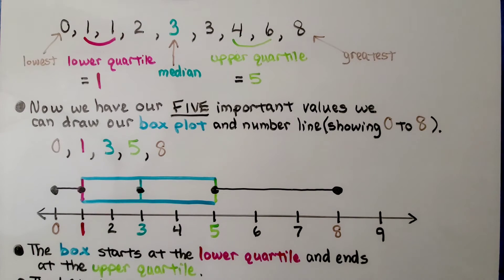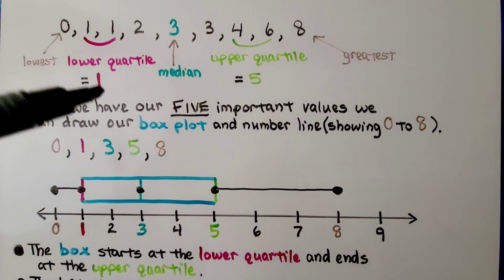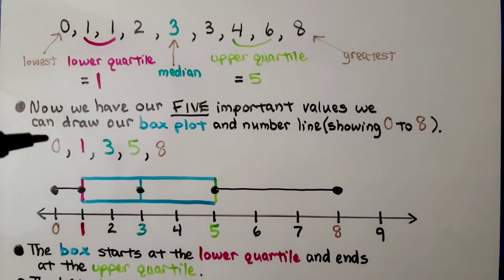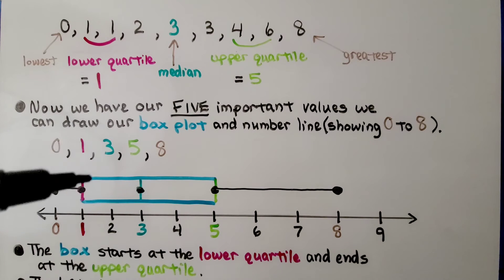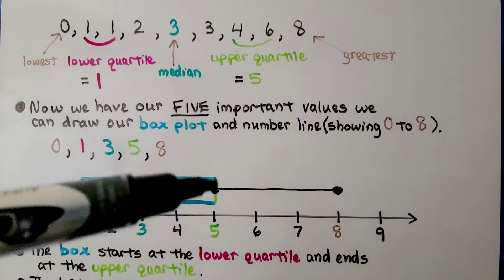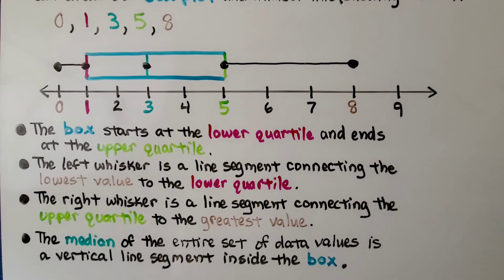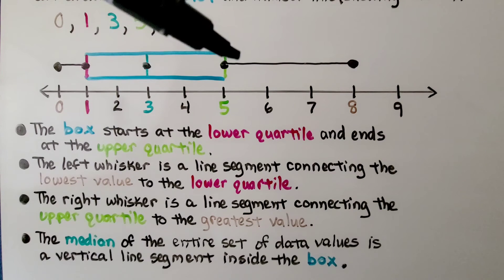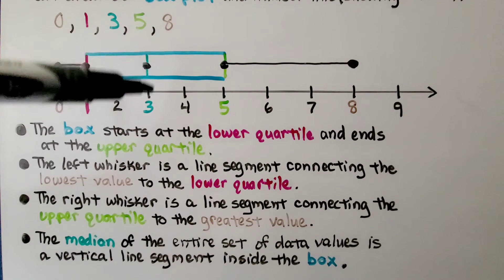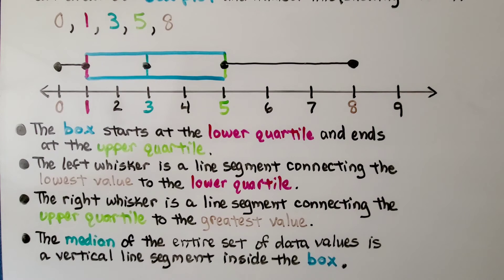Now we know the 5 important values: lowest value, greatest value, median, lower quartile of 1, and upper quartile of 5. We can draw our box plot on a number line showing at least 0 to 8. The box starts at the lower quartile of 1 and ends at the upper quartile of 5. The left whisker connects the lowest value to the lower quartile, the right whisker connects the upper quartile to the greatest value of 8, and the median is a vertical line segment inside the box. This box plot displays how the data values are distributed or spread out.